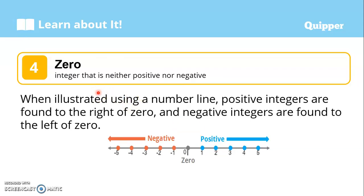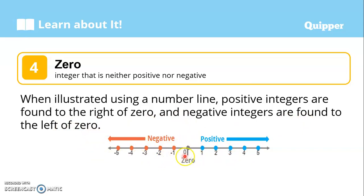Zero is the integer that is neither positive nor negative — it has no sign. When illustrated using a number line, positive integers are found to the right of zero and negative integers are found to the left of zero. Zero is in the middle and it doesn't have any sign.